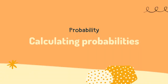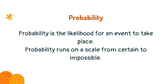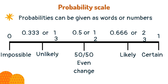Calculating probabilities. Probability is the likelihood for an event to take place. Probability runs on a scale from certain to impossible. Probabilities can be given as words or numbers. When written as numbers, a probability can be expressed as a fraction, decimal or percentage.